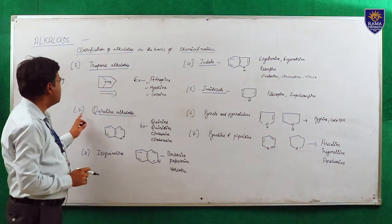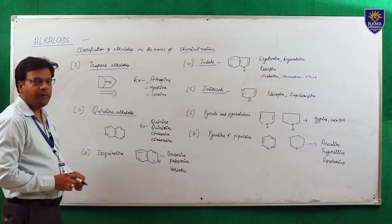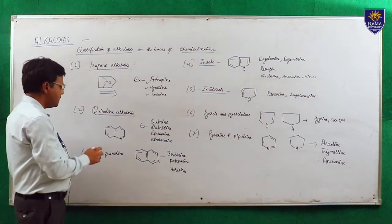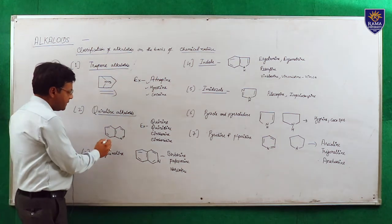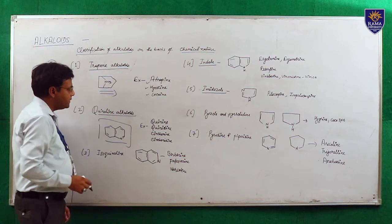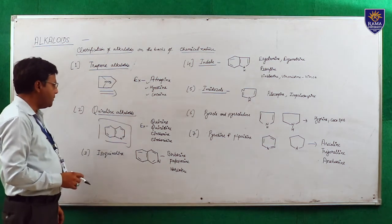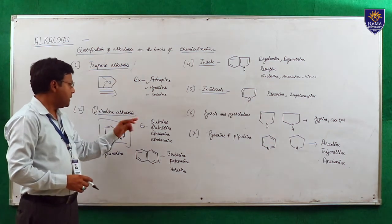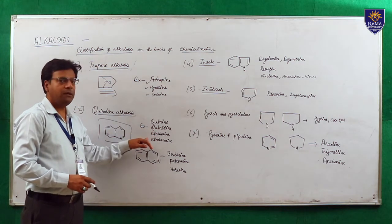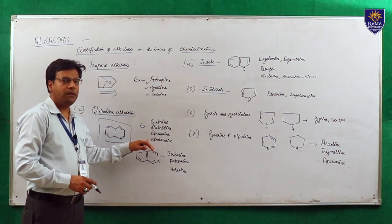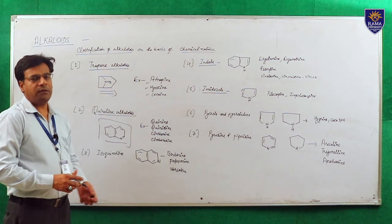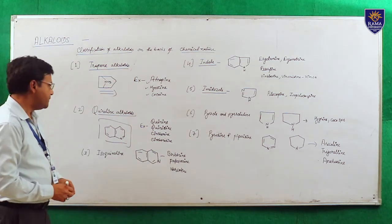Another type is quinoline alkaloids. The basic moiety is a quinoline ring, and examples of quinoline alkaloids are quinine, quinidine, cinchonine, and cinchonidine. These are all obtained from cinchona bark.